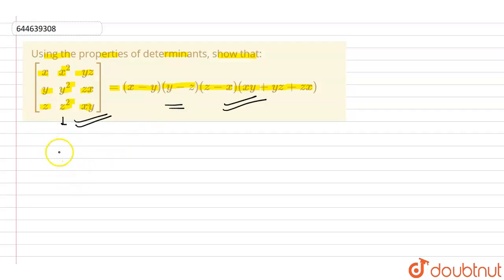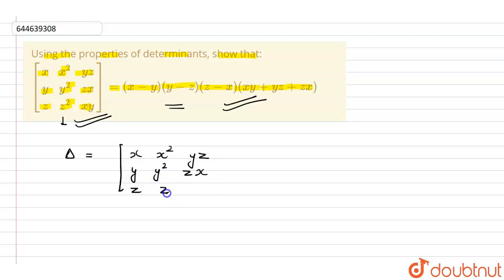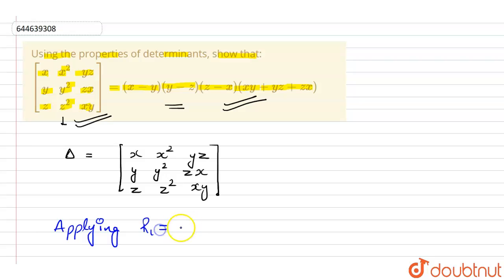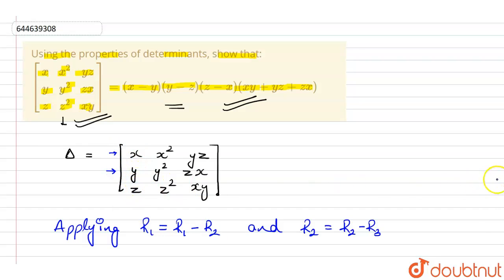First, we will find the determinant. We have x, x², yz; y, y², zx; z, z², xy. We will apply properties of the determinant on the rows: R1 = R1 − R2, and R2 = R2 − R3.